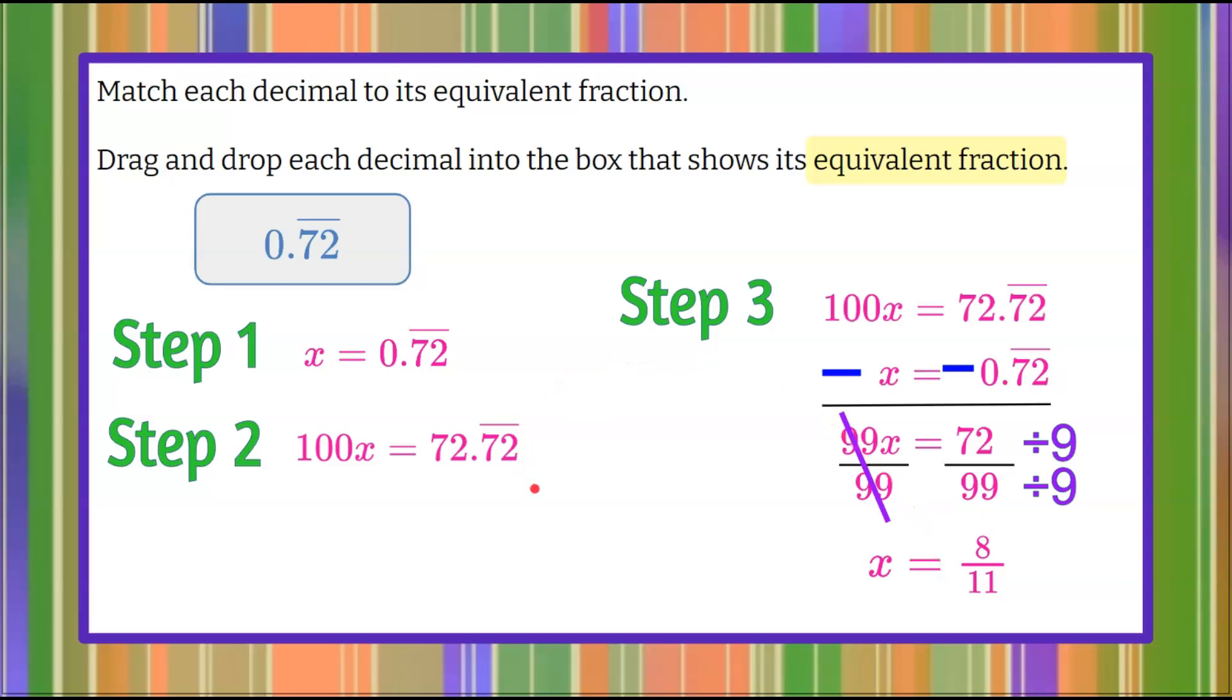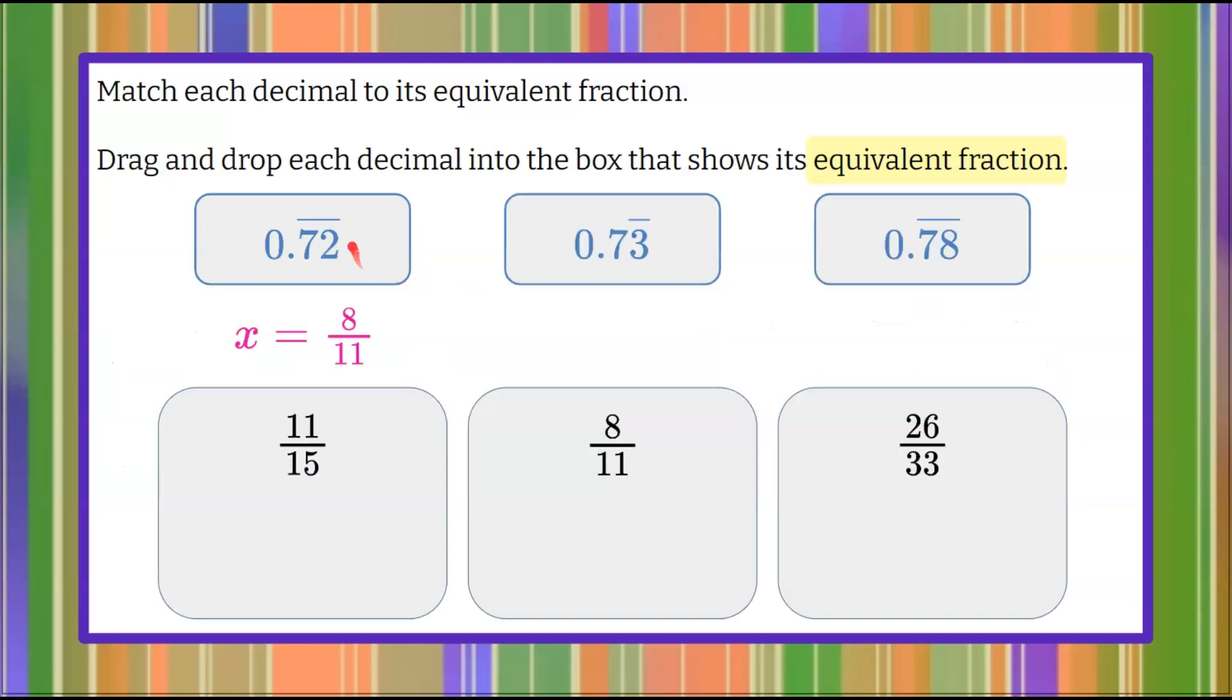So you wouldn't have a calculator accessible to you on a state exam. However, if you want to check your math now, use a calculator. 8 divided by 11 will result in 0.727272. So let's go back and bring forward our work. We've discovered that 0.72 repeating is equivalent to 8 elevenths. So we're going to take that and drag it into the correct box.